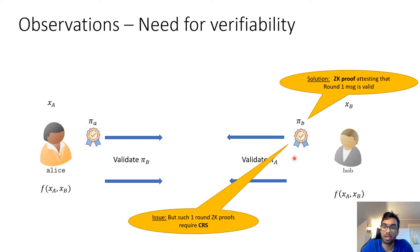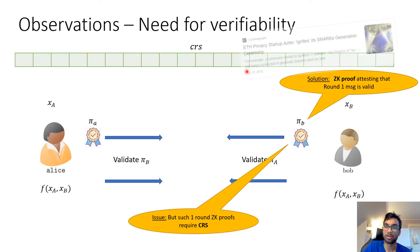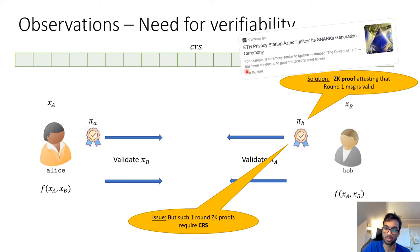The problem is that such one-round zero-knowledge proofs, also called non-interactive zero-knowledge proofs, require a CRS (common reference string) — a long string that everyone has public access to. Generating such a CRS requires some kind of trusted setup; for example, CRS ceremonies are conducted in cryptocurrency domains to bootstrap such protocols. Ideally we want to remove the need for such a CRS, so the natural question is: can we do two-round MPC in the plain model, which doesn't require any trusted setup phase?